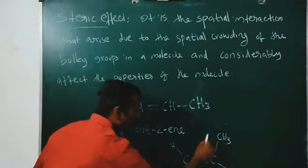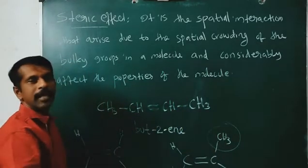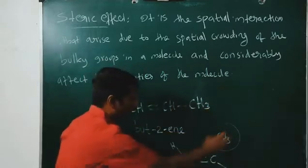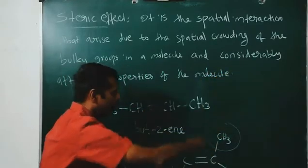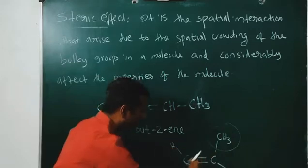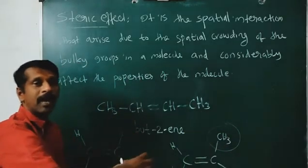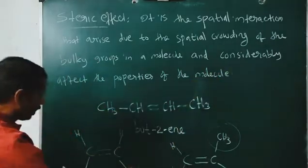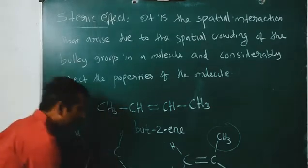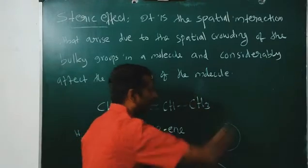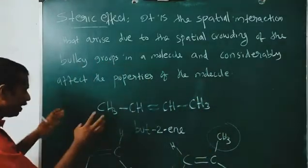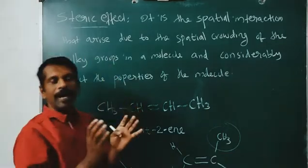In the trans-isomer, the two bulky groups are on the opposite side — they are as far apart as possible. There will not be any steric crowding in trans-but-2-ene, and there will not be any steric repulsion between these two bulky groups because they are far apart. But in cis, the two bulky groups are close to each other, resulting in steric crowding and steric repulsion. Therefore, trans-isomer is more stable than cis-isomer. This is what is called steric effect.